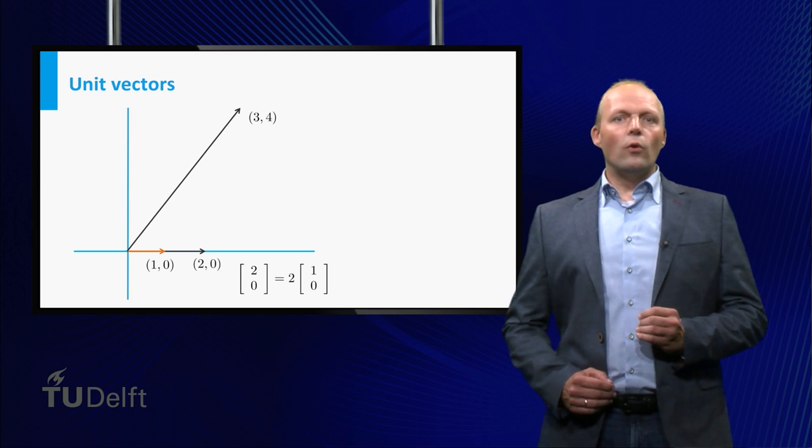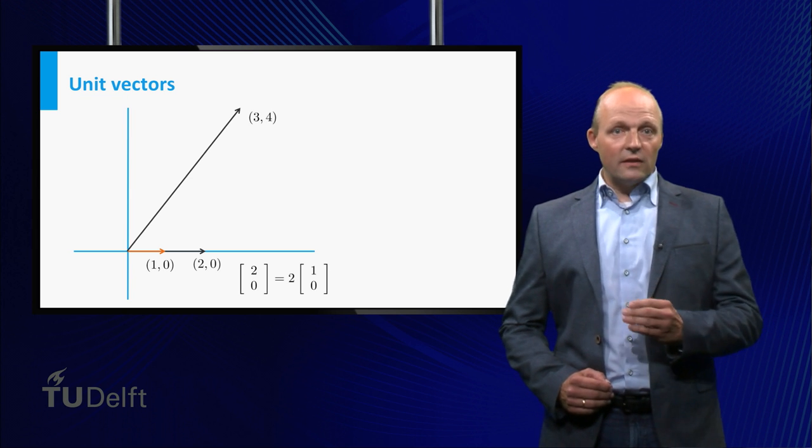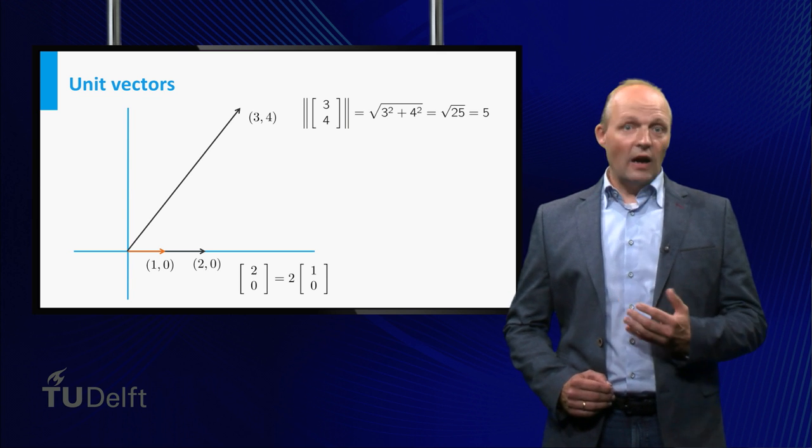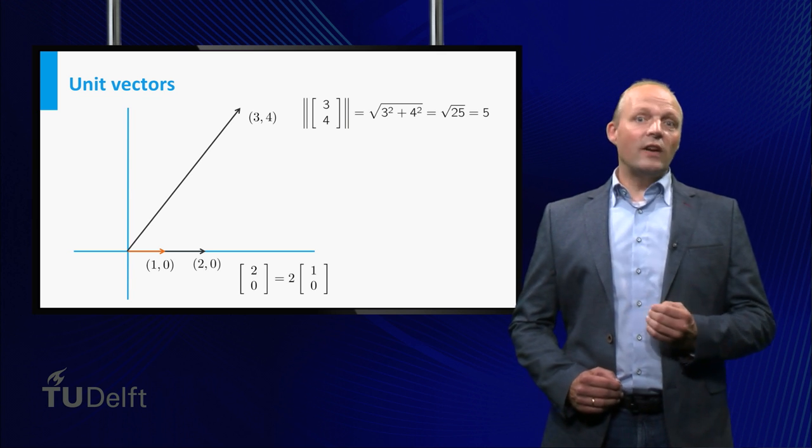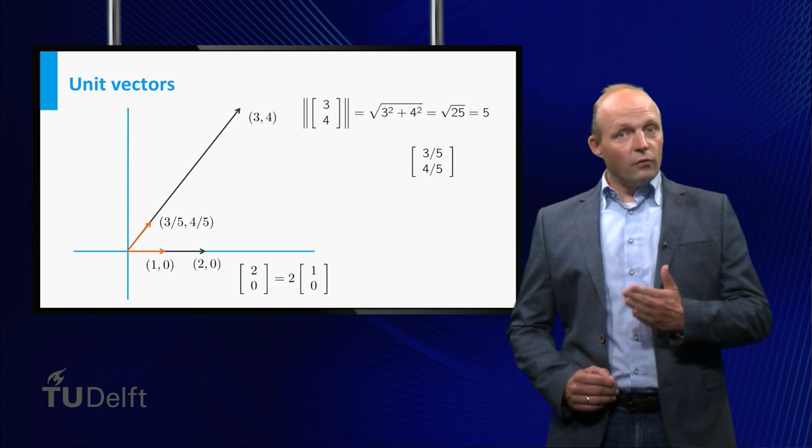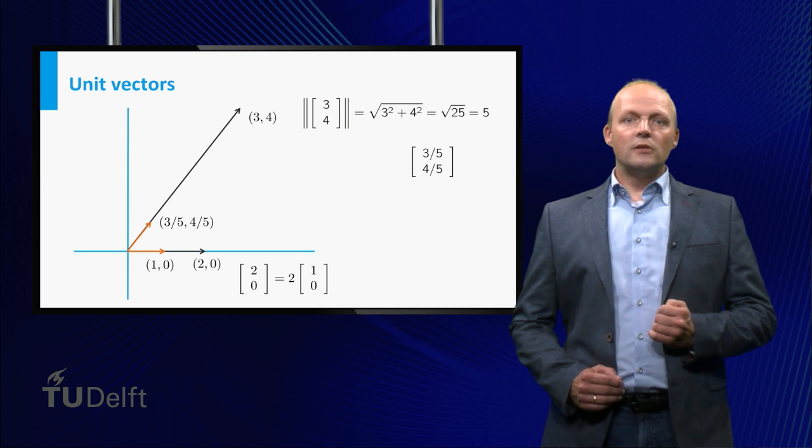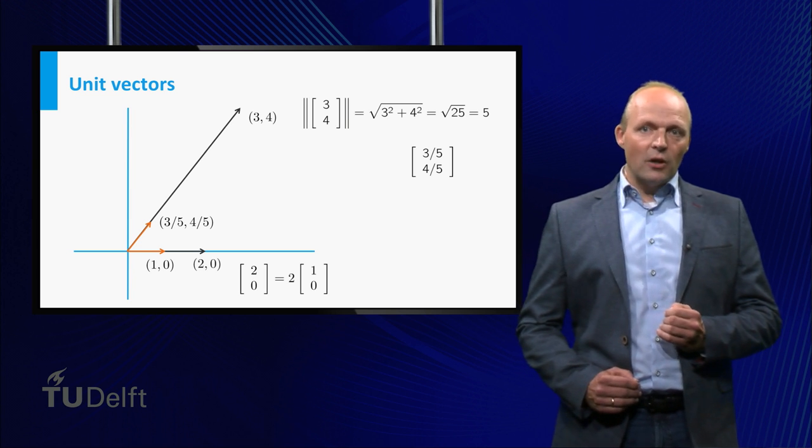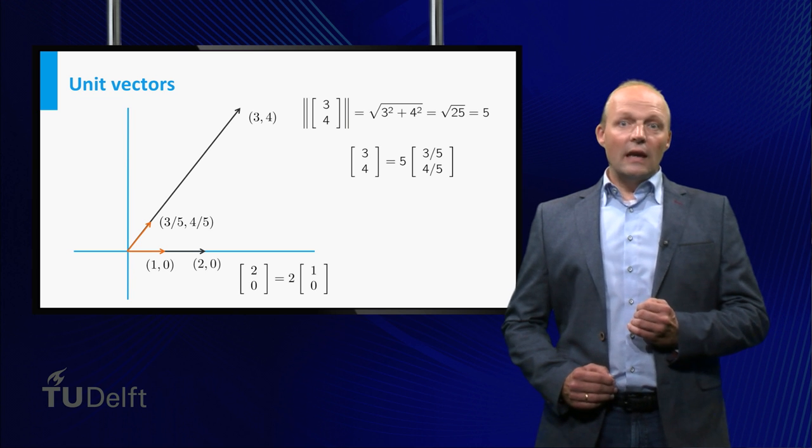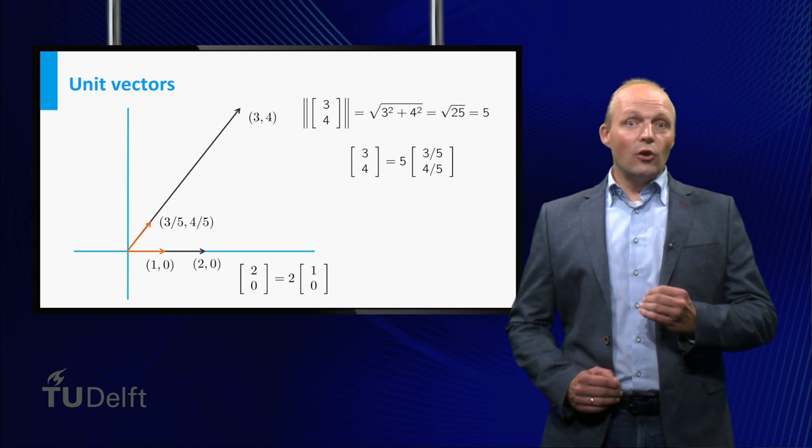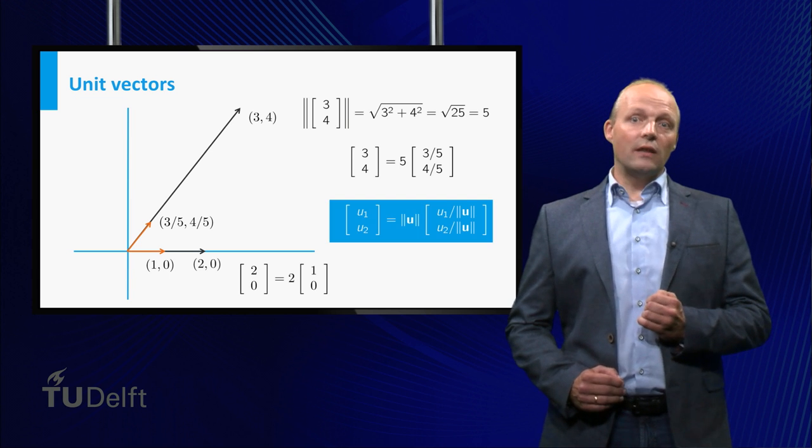Consider the vector 3, 4. The length of this vector is the square root of 9 plus 16, which is 5. So the unit vector with the same direction as 3, 4 is the vector 3/5, 4/5. Just like before, the vector 3, 4 can be seen as the scalar product of its length and its associated unit vector. In general, any non-zero vector can be decomposed in this way.